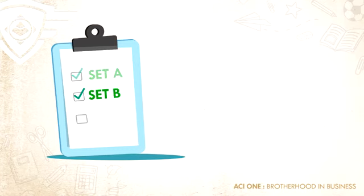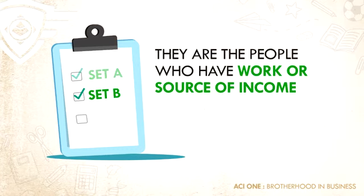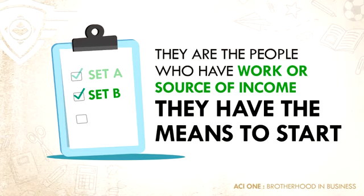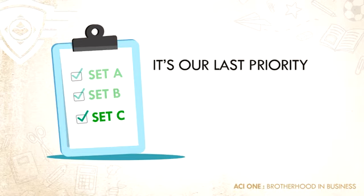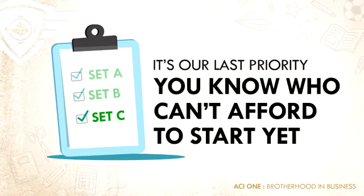Set B are the people who have work or a source of income. They can join also because they have the means to start the business. Set C is our last priority — they are the people you know who can't afford to start yet.